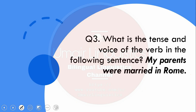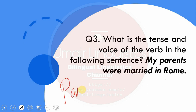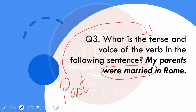Question 3: What is the tense and voice of the verb in the following sentence — 'My parents were married in Rome'? The tense is past tense. The voice is passive, because the word 'married' — the third form of the verb — comes just after 'were', making it a passive construction.